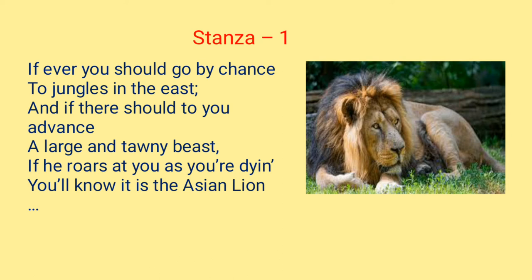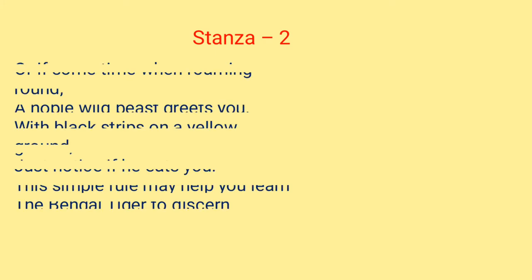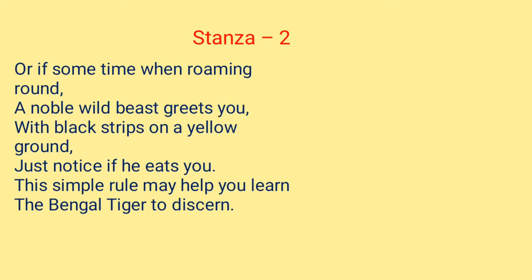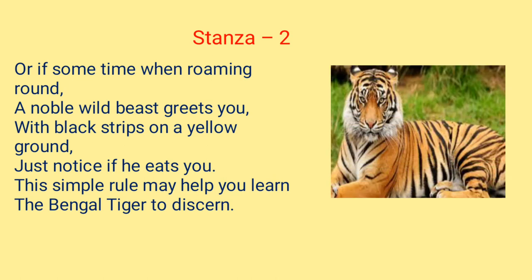So in the first stanza, the poet talks about the Asian lion. Now we see stanza 2: 'Or if sometime when roaming around, a noble beast greets you with black stripes on a yellow ground, just notice if he eats you. This simple rule may help you learn the Bengal tiger to discern.' Here it is the Bengal tiger. Discern means to make out, to identify.